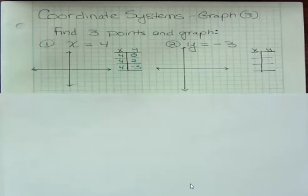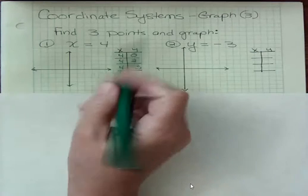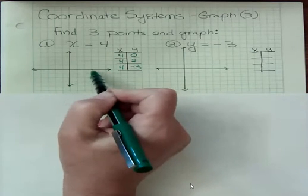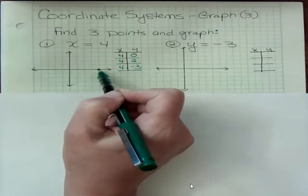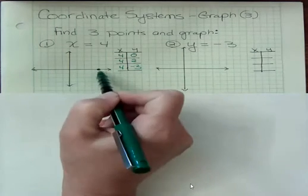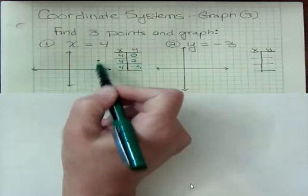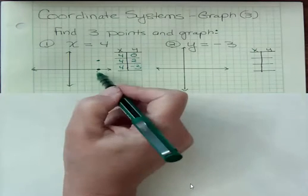What's important is that we make x be 4. So x is 4, 1, 2, 3, 4, when y is 0. x is 4 when y is 2. x is 4 when y is negative 3.